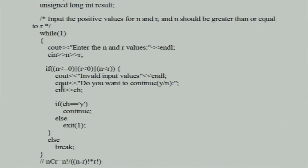If N and R are valid values, we break from the infinite loop. After returning from the while loop, we calculate factorial(N), factorial(N-R), and factorial(R) by calling the factorial function three times. The expression result = factorial(N) / (factorial(N-R) * factorial(R)) gives the NCR value. Then using cout, we print N C R = result. We are not forcing the user to give N and R values if they are invalid — we give the option to continue or not.